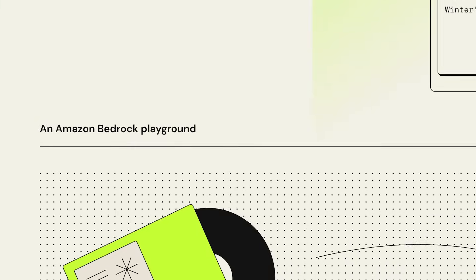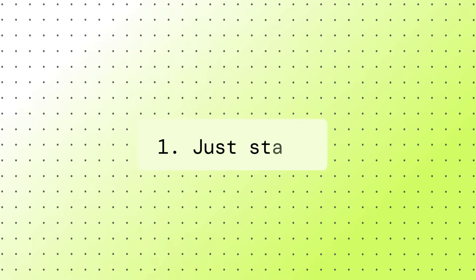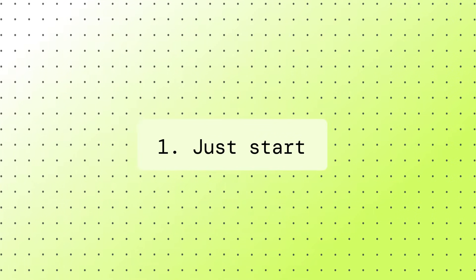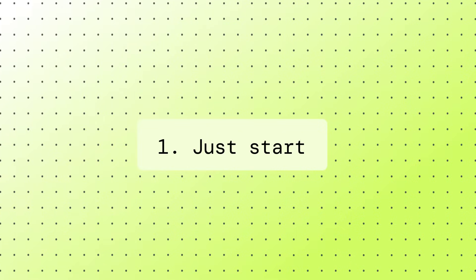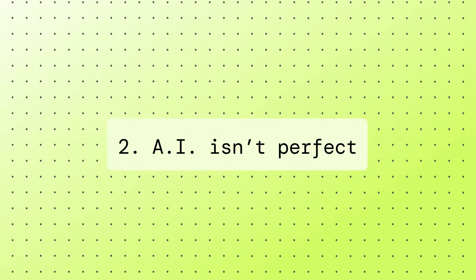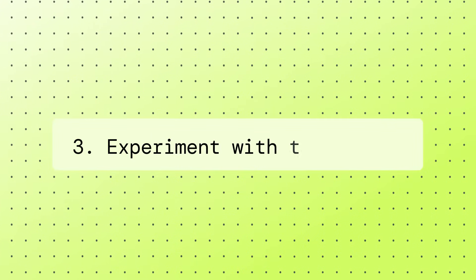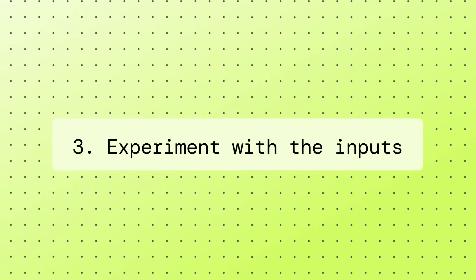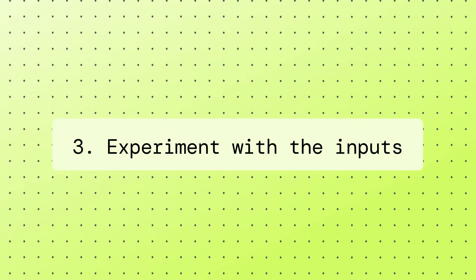Three things I want you to take away. Number one, just start — a lot of people are intimidated by the technology, but you really just got to get started. Number two, AI is not perfect, so you should always keep a human in the loop. And number three, remember to experiment with the inputs and the parameters of the models to get the output that you want.